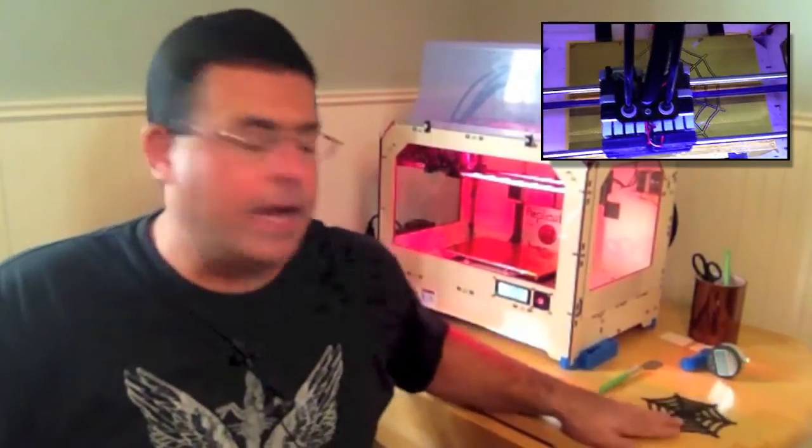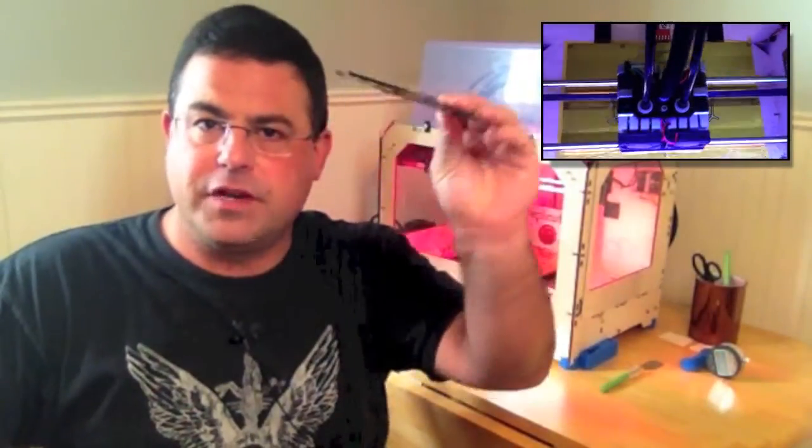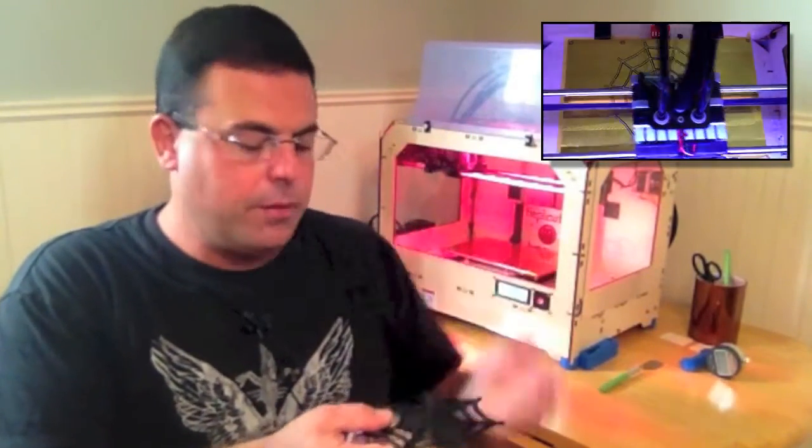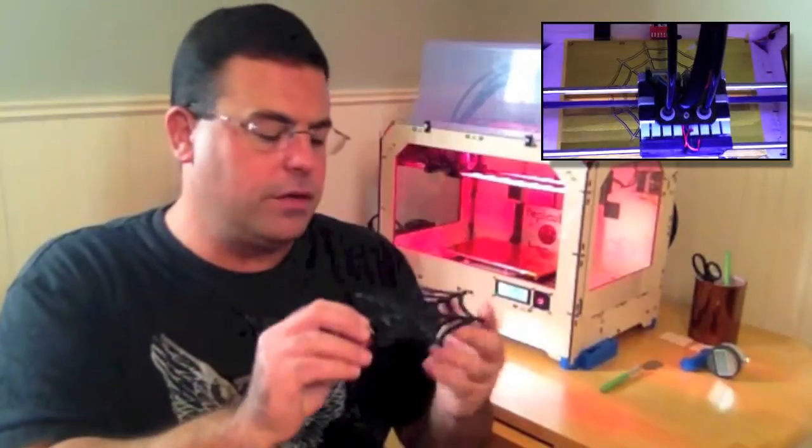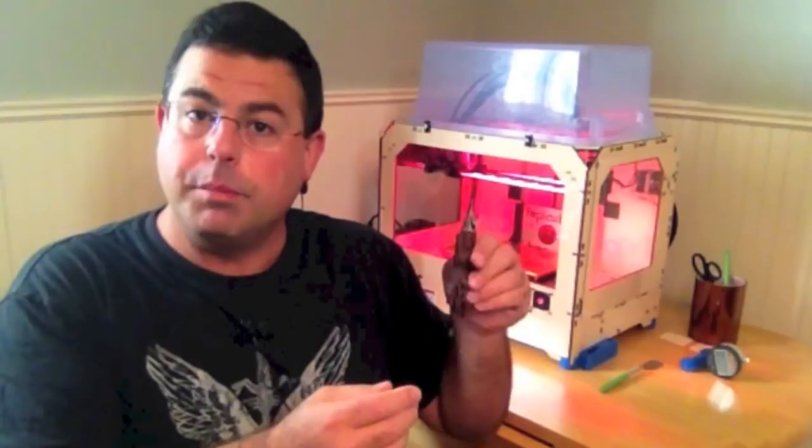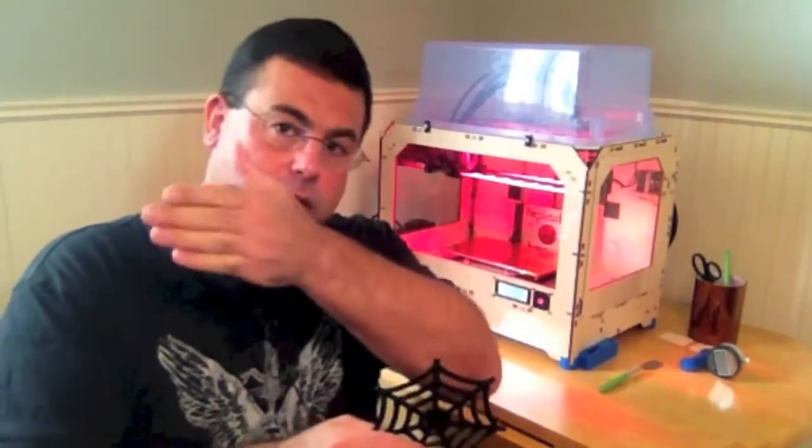You can imagine if you're printing something flat, like this spiderweb, it draws each layer by layer and when you're done it's all built up on top of each other and you remove it from the platform and you have a flat print. But what if you wanted to print it standing up? What if you wanted to print a letter or a word with a letter T? How do you do that?